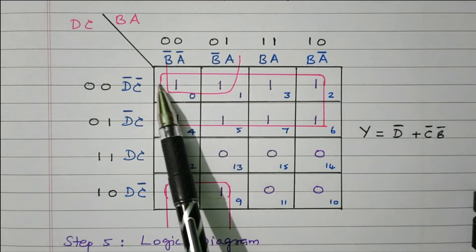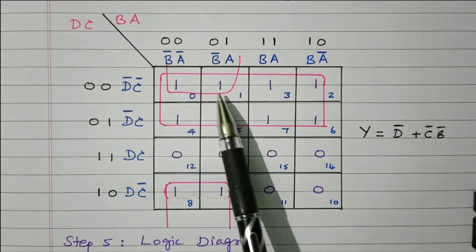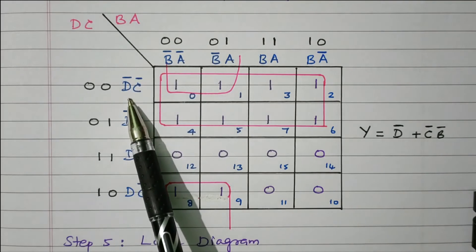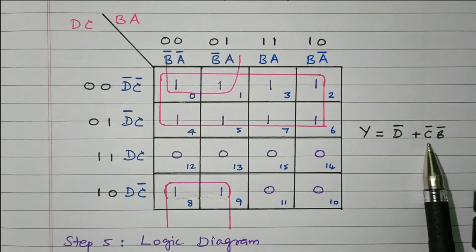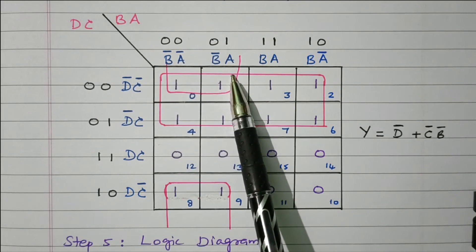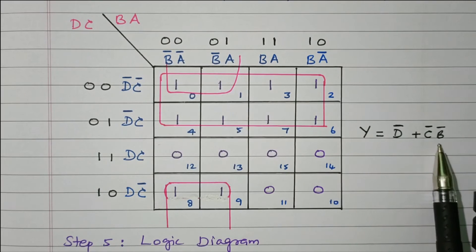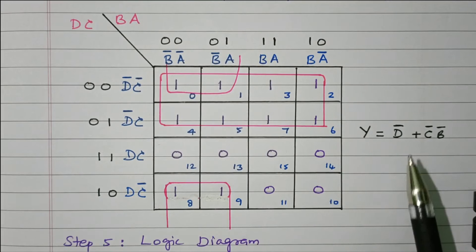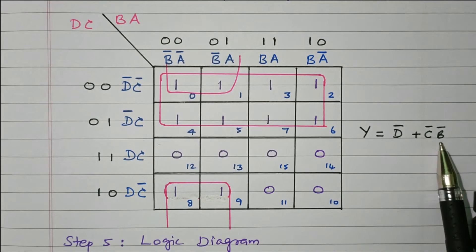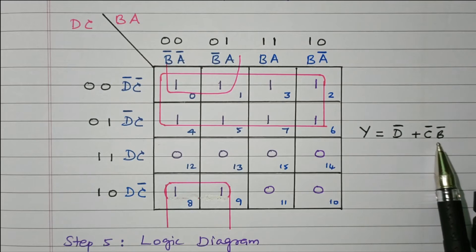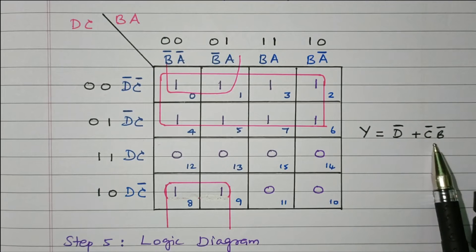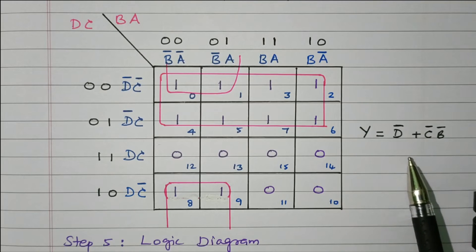Now grouping these 4 cells: we refer to the 1st row, 4th row, 1st column, and 2nd column. For the rows, D̄C̄ and DC̄ share C̄ — D̄ and D cancel, leaving only C̄. For the columns, B̄Ā and B̄A share B̄ — Ā and A cancel, leaving only B̄. So grouping these 4 cells gives C̄B̄. Therefore the reset logic Y equals D̄ + C̄B̄.